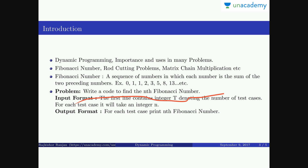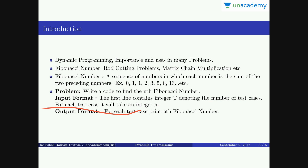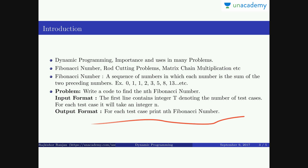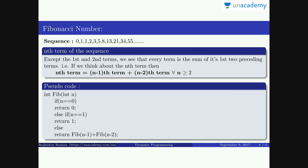The problem statement here is: we have to write a code to find the nth Fibonacci number. The input format is — the first line contains integer t denoting the number of test cases, and for each test case it will take an integer n. On the basis of integer n we have to print the nth Fibonacci number for each test case. This is the output format.